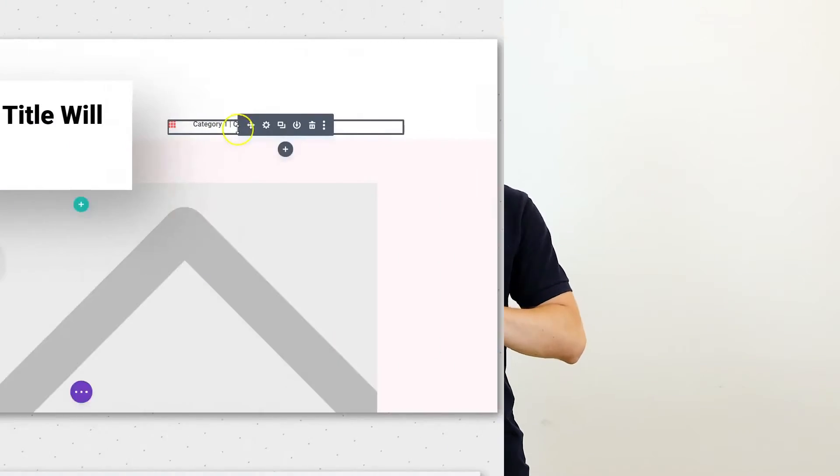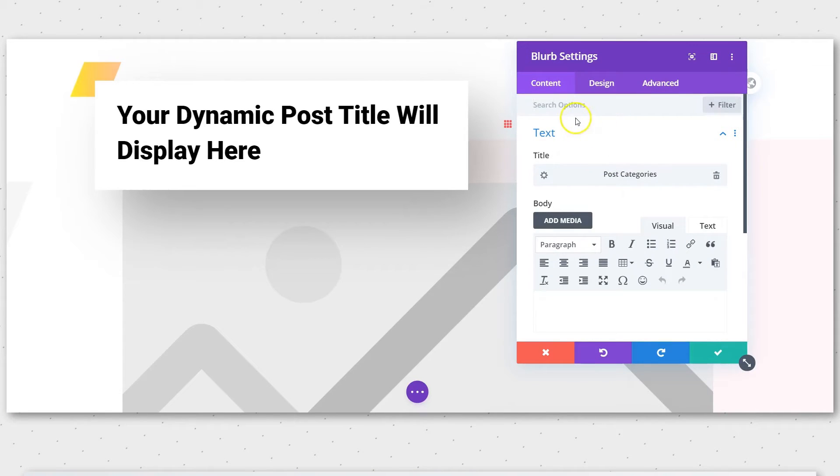And the last drag-and-drop builder on our list is Divi by Elegant Themes. This builder's interface is very unique, it's all floaty buttons and pop-ups, but while a lot of people will be big fans of it, it will definitely take some time to get used to it.